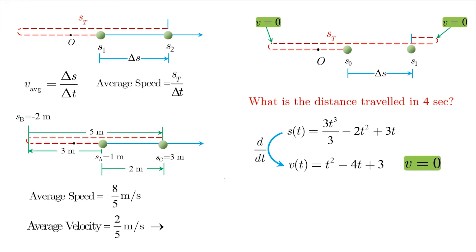Then make it equal to zero. You can easily solve this quadratic equation to find that at t equals one and t equals three, the velocity is actually equal to zero.